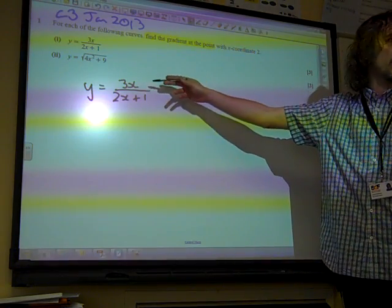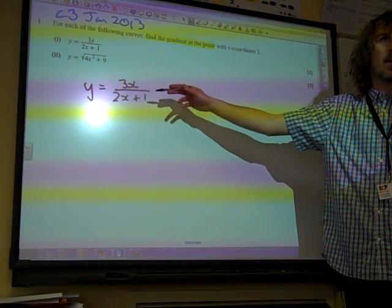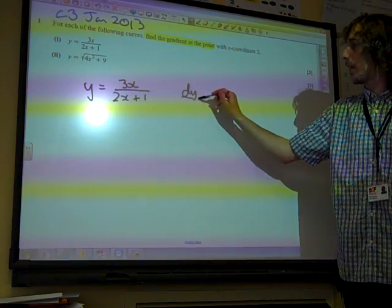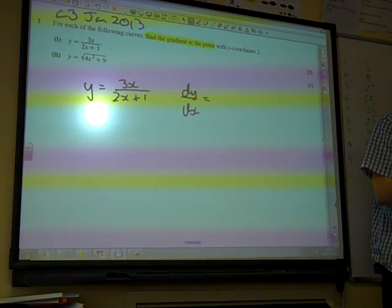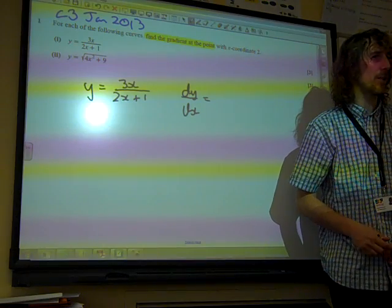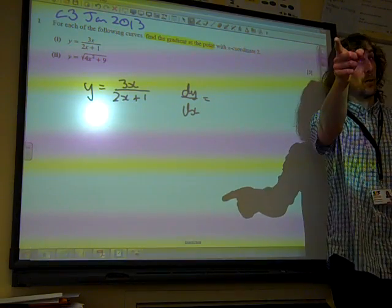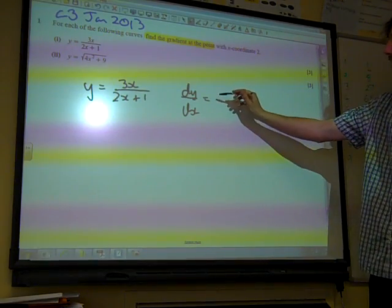The u is 3x and the v is 2x plus 1. Both of them differentiate really easily, don't they? So, dy by dx. Remember, it's v du/dx minus u dv/dx, all over v squared. How do you remember which one comes first, v to u or u to v? Visual display. Visual display, brilliant, v to u.